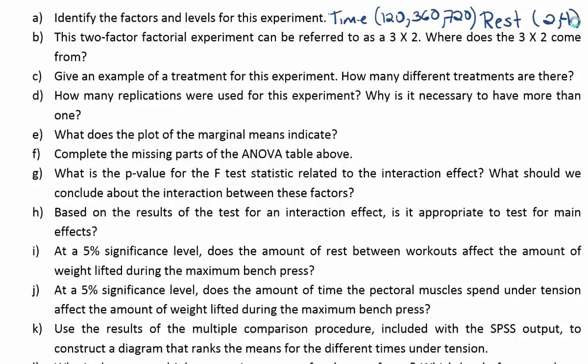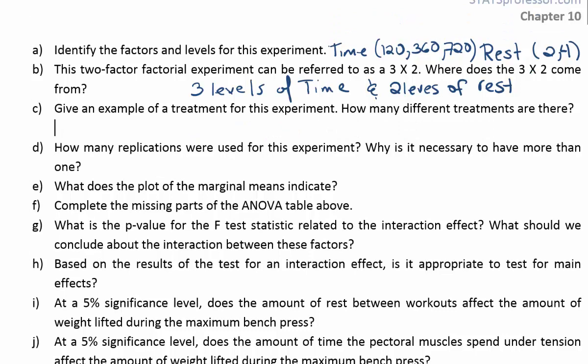For part B, this two-factor factorial experiment is referred to as a 3x2. The 3x2 comes from the levels for each factor — three levels of time and two levels of rest. For part C, give an example of a treatment: a treatment is just a combination of factor levels, for example 120 seconds under tension with two days rest. How many different treatments are there? Since there are three time levels and two rest levels, it's three by two, giving six total possible treatments.